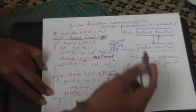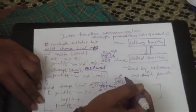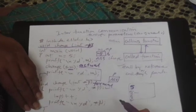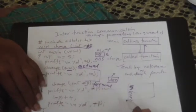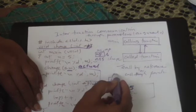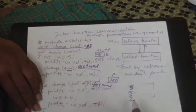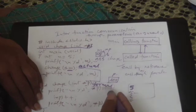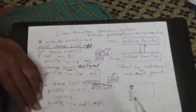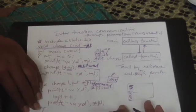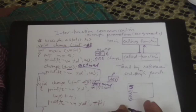So in case of this call by reference, the changes made to the formal parameters will affect the actual parameters. But as far as the C language is concerned, the formal parameter is actually referring to the actual parameter only. So if the changes made to the formal parameters are affecting the actual parameters, we call it as call by reference. Thank you.